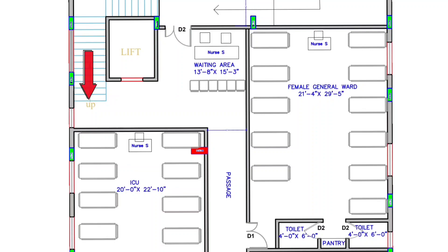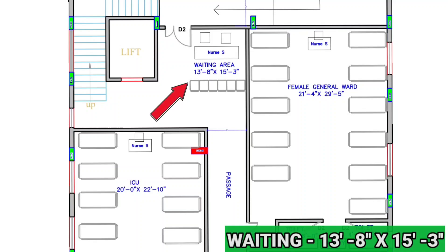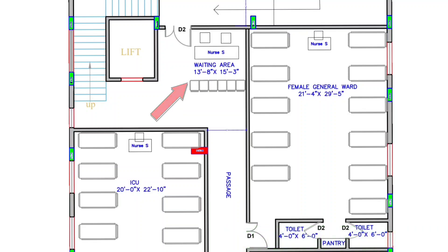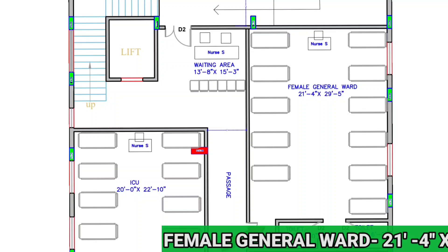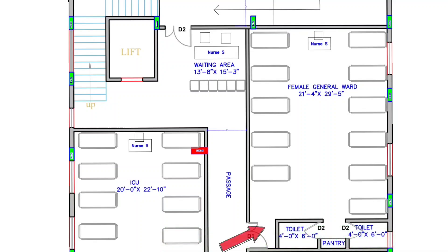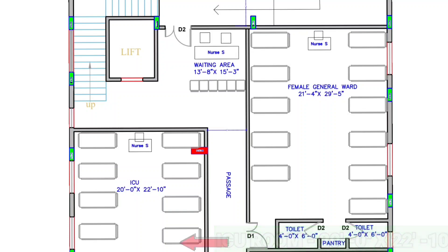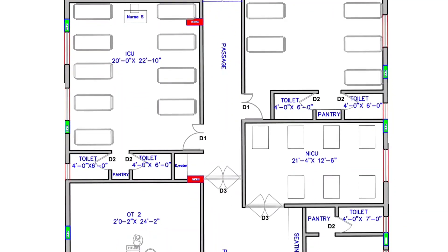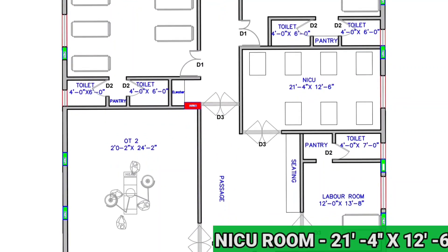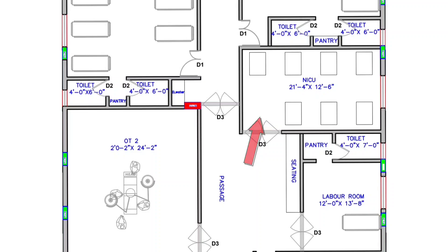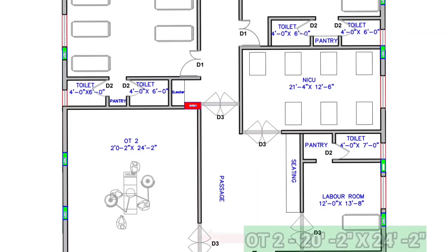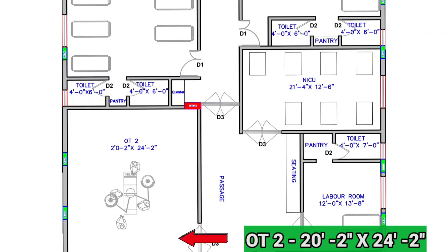Friends, this is the map of the first floor. After reaching the first floor, there is a waiting area sized 13 feet 8 inches by 15 feet 3 inches. On the right side of the waiting area, we have provided a female general ward sized 21 feet 4 inches by 29 feet 5 inches. On the left-hand side of the female general ward, there is an ICU room sized 20 feet by 22 feet 10 inches. After the ICU room, there is a NICU room on the right-hand side, sized 21 feet 4 inches by 12 feet 6 inches.